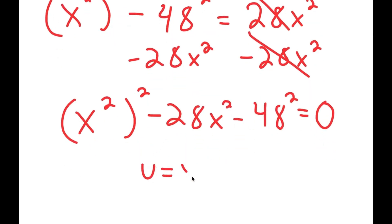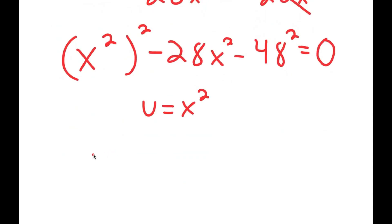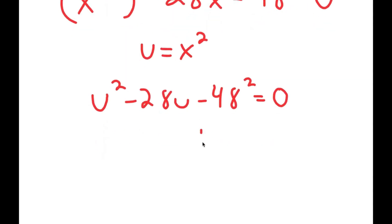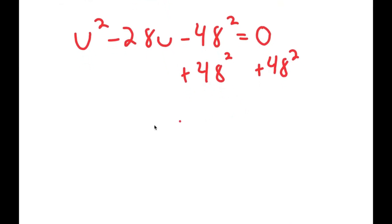Now I'm going to set u equal to x squared. So I get u squared minus 28u minus 48 squared equals zero. I can solve this by completing the square, so I add 48 squared to both sides, giving u squared minus 28u equals 48 squared.